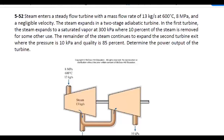Steam enters a steady flow turbine with a mass flow rate of 13 kilograms per second at 600 Celsius and 8 megapascals with negligible velocity, so we can ignore kinetic energy. The steam expands in a two-stage adiabatic turbine. In the first turbine, the steam expands to a saturated vapor at 300 kilopascals, where 10% of the steam is removed. The remainder continues to expand in the second turbine, exiting at 10 kilopascals with a quality of 85%.